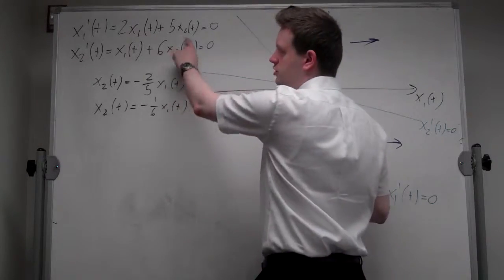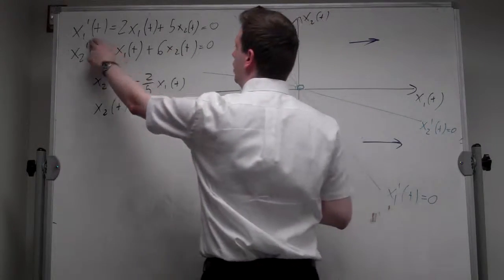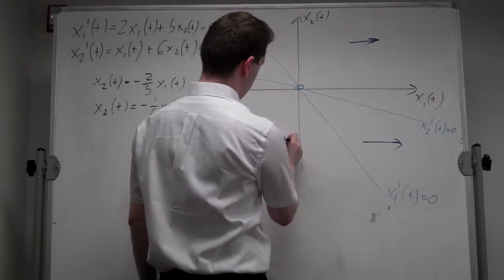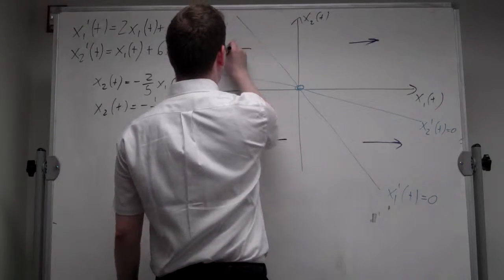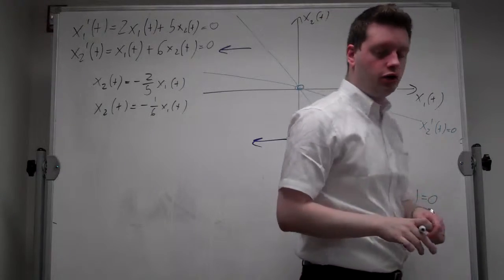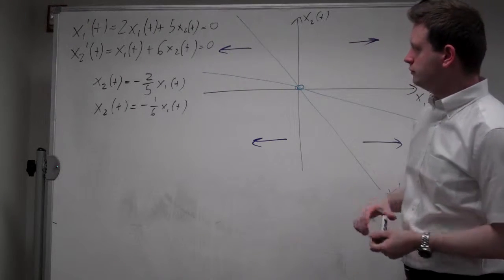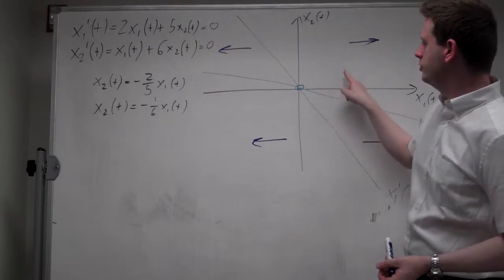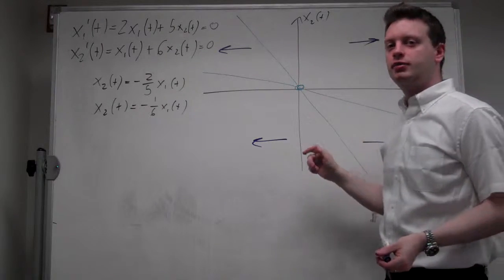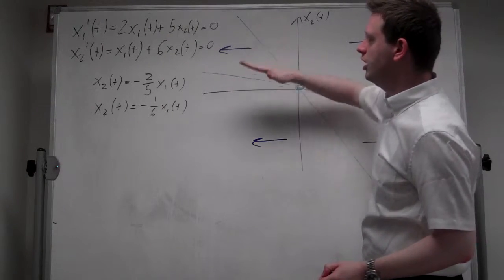Conversely, if x2 t shrinks, we'll move to the left. And note that I put down four arrows for each of the four segments divided by these two lines.